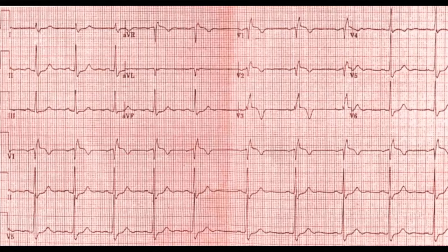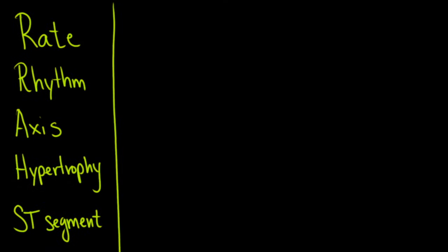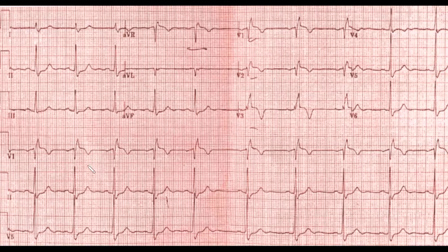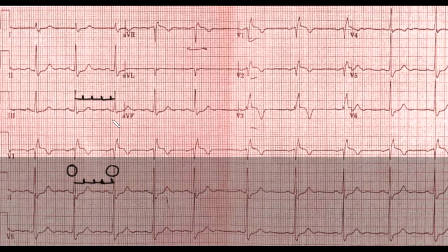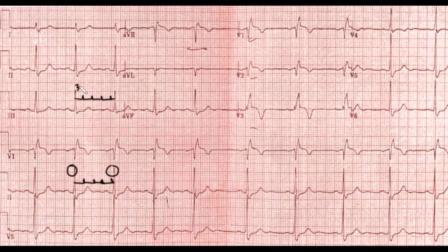Let's go through our evaluation using the five-step process. The first thing we want to look at is rate. We pick the QRS complex and count boxes between complexes. We can see one, two, three, four boxes and a little bit more — consistently across multiple complexes.